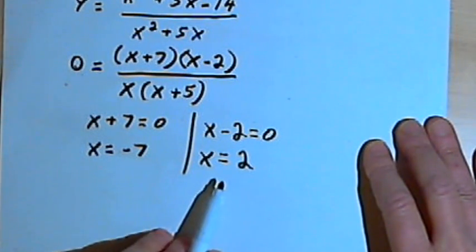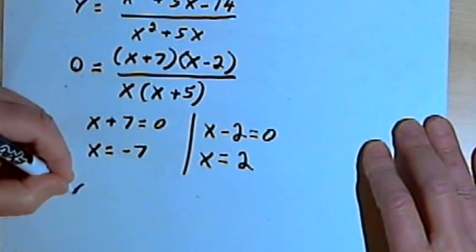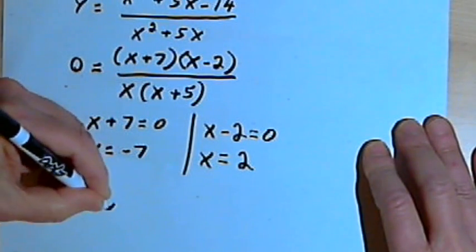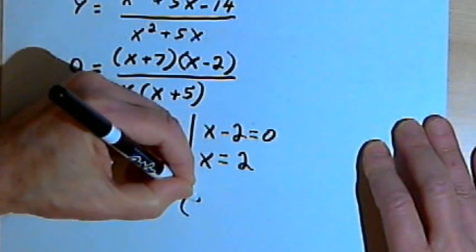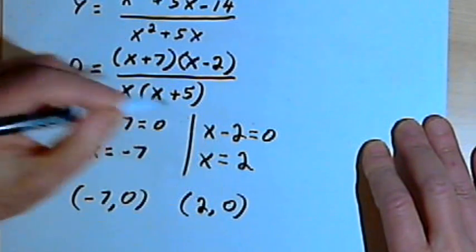So I will have two x-intercepts. One is going to be at the point negative 7 comma 0, and the other is going to be at the point 2 comma 0.